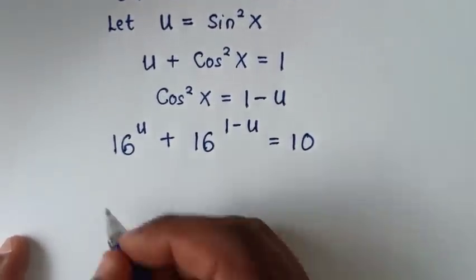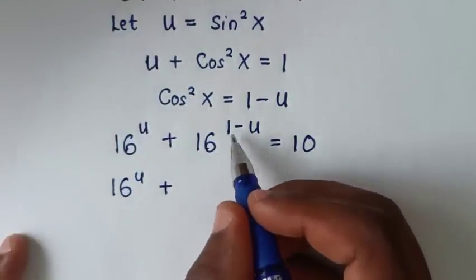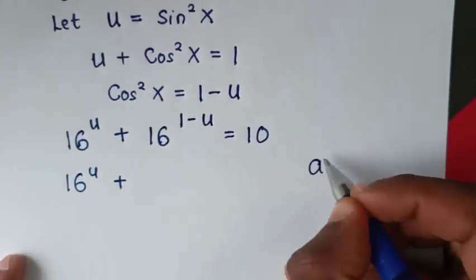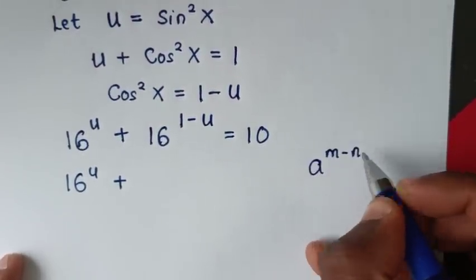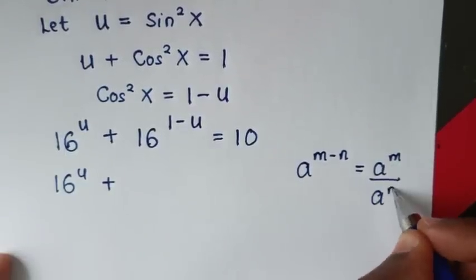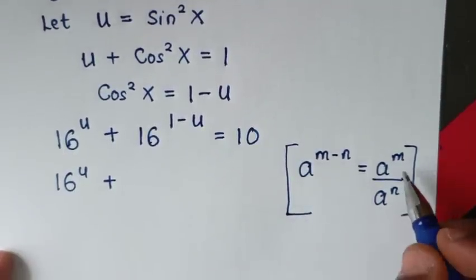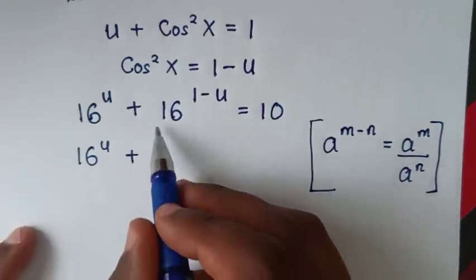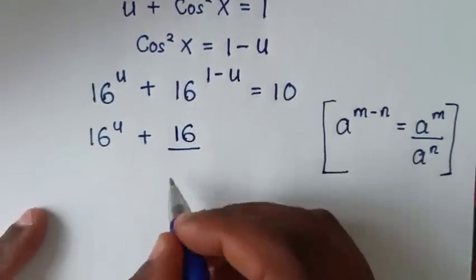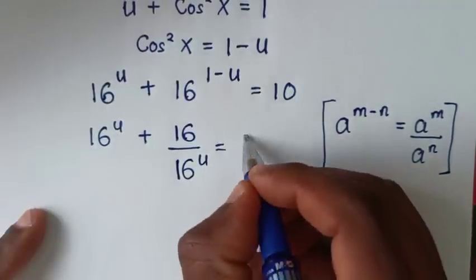In the next step, it will be 16 power of u plus 16 power of 1 minus u. This is in the form of the exponential rule, which is a power of m minus n equals a power of m over a power of n. So from this rule, it will be 16 power of 1, which is 16, over 16 power of u, so 16 power of u plus 16 over 16 power of u is equal to 10.